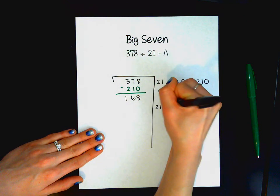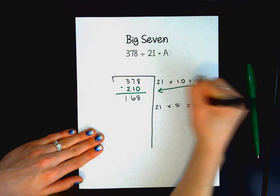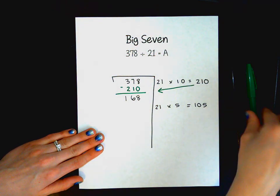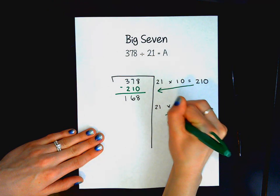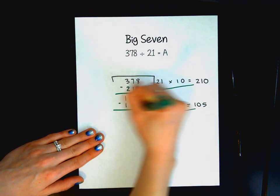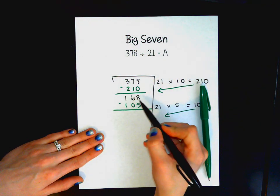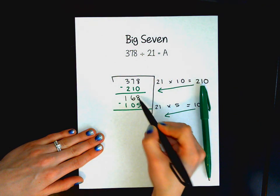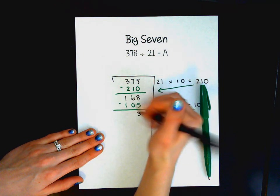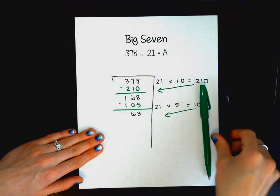So 21 times 5 will be 105. I'm going to draw an arrow just to help keep myself organized like I did before. And now I'm going to be subtracting 105 from the 168 that I have remaining. 8 minus 5 is 3, 6 minus 0 is 6.